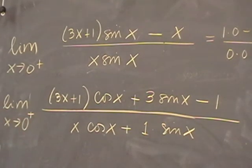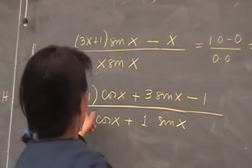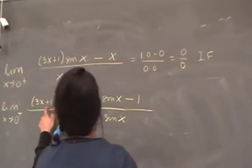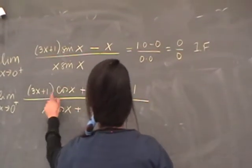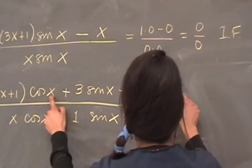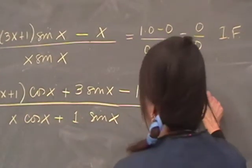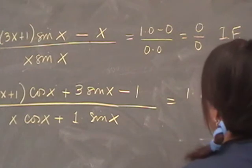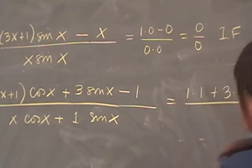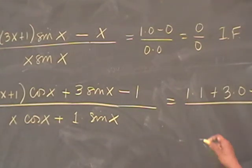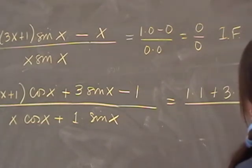And let's see. If we substitute, I guess we get something here. We have 0 plus 1 times cosine of 0, which is 1. So we get 1 times 1, plus 3 times 0 minus 1. Did I do that right? So it's 0. And then this is 0.